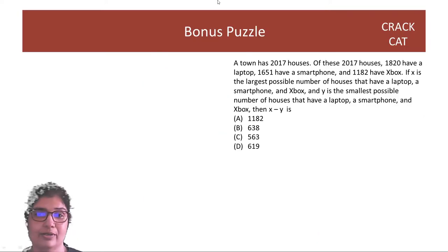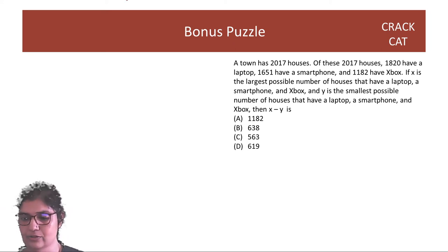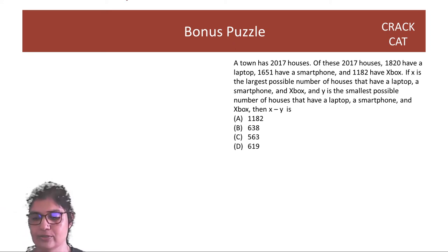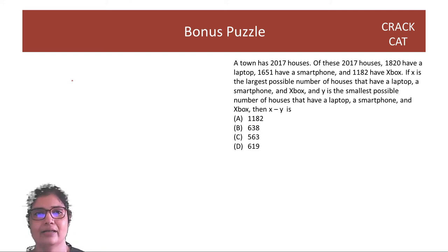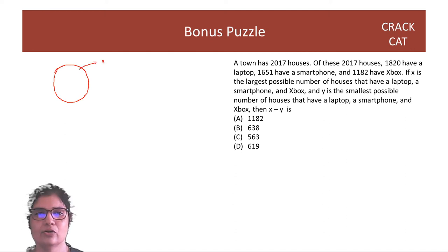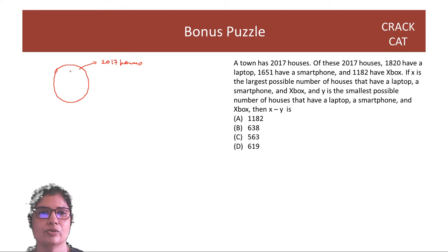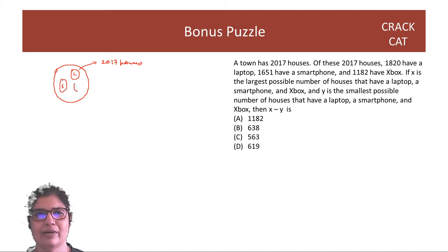Let's do the puzzle I left you with yesterday. Yesterday I had just given you the puzzle without the options. Today we can look at the options also while solving. So a town has 217 houses. If I just denote houses with a circle — these are your 2017 houses. Some of these houses have a laptop, some have a smartphone, and some have an Xbox. Here I have made three circles that are non-intersecting.